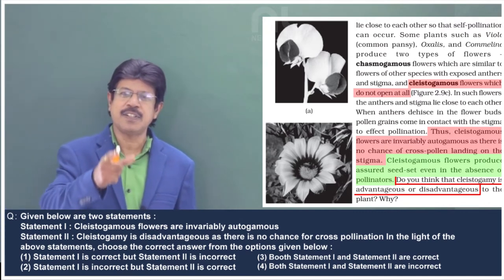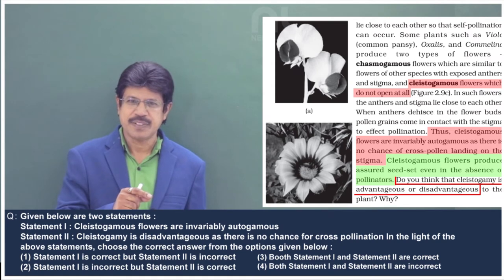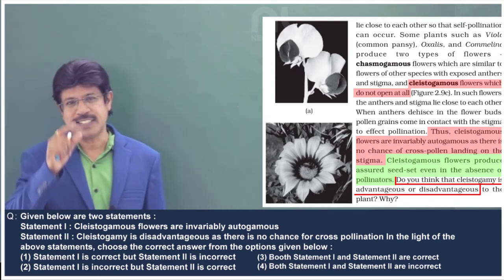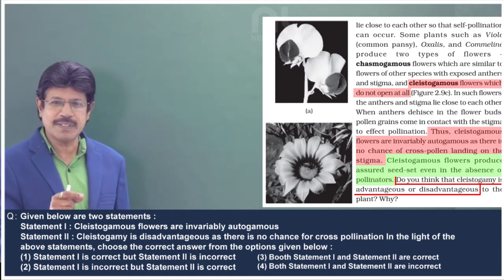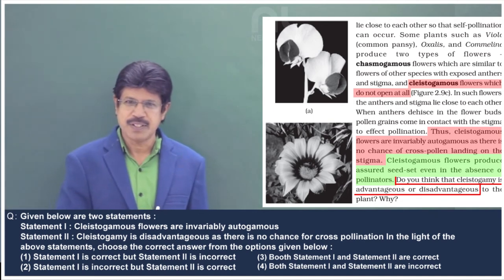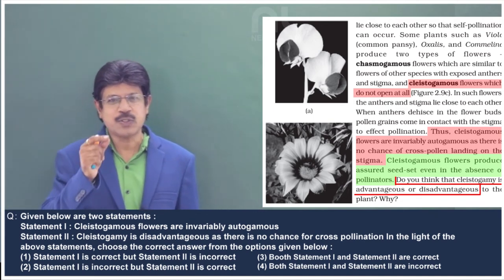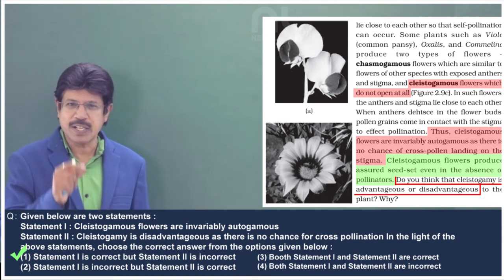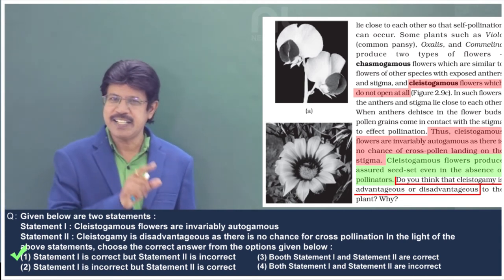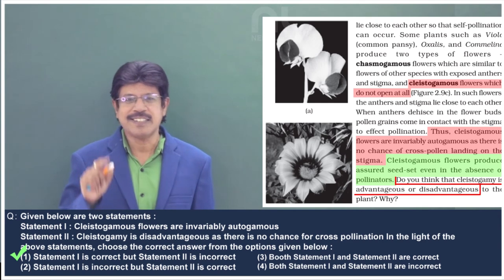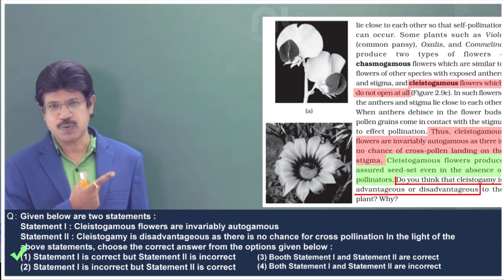Even in absence of pollinators, there is assured seed set. Assured seed set means there is great success. In absence of cross-pollination, certainly cleistogamous flowers—cleistogamy—is advantageous, not disadvantageous, as per the textual lines.